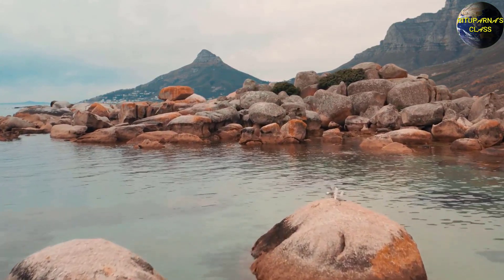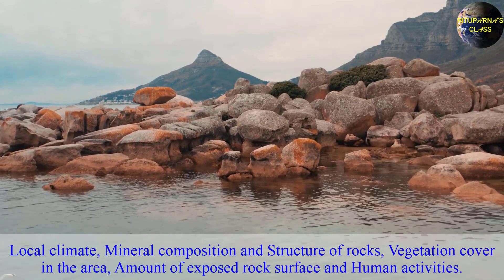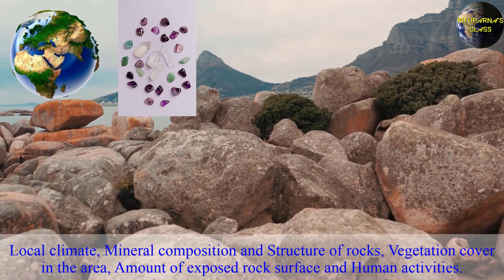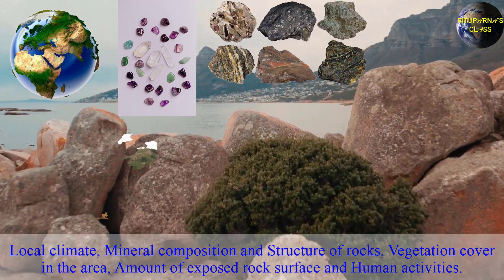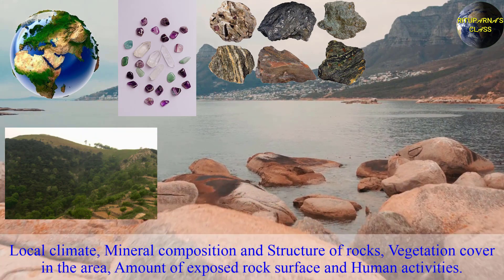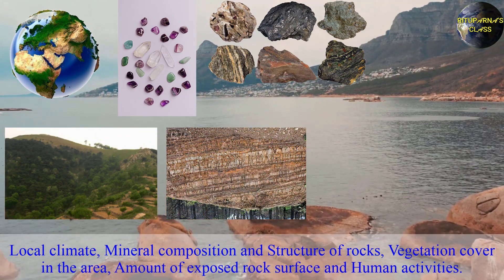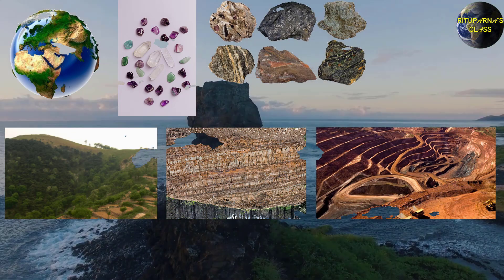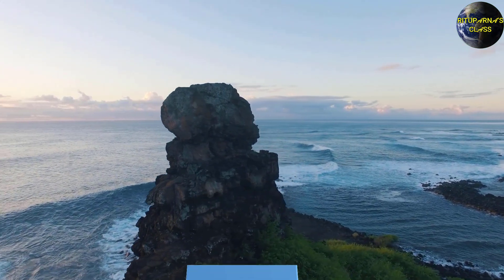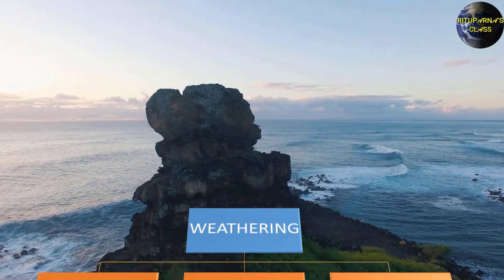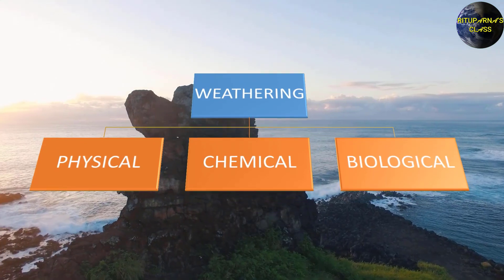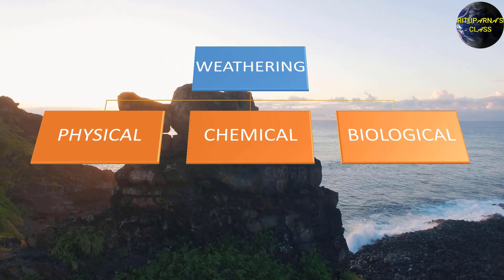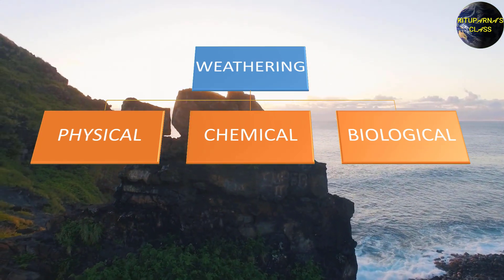There are various factors which influence weathering in an area. These are local climate, the composition of minerals, structure of rocks, vegetation cover in the area, amount of exposed rock surface, and obviously human activities. There are mainly three types of weathering: physical weathering, chemical weathering and biological weathering. These processes are very closely interrelated.